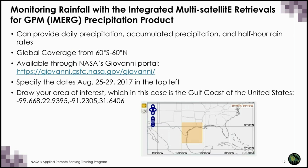You can access the IMERG precipitation product through the Giovanni link. IMERG can provide daily precipitation, accumulated precipitation, and half-hour rain rates, with coverage from 60 degrees north to 60 degrees south. Once in the Giovanni site, specify the dates of interest — for Hurricane Harvey, specify August 25th through 29th, 2017 — and specify your area of interest according to the coordinates for the Texas region.